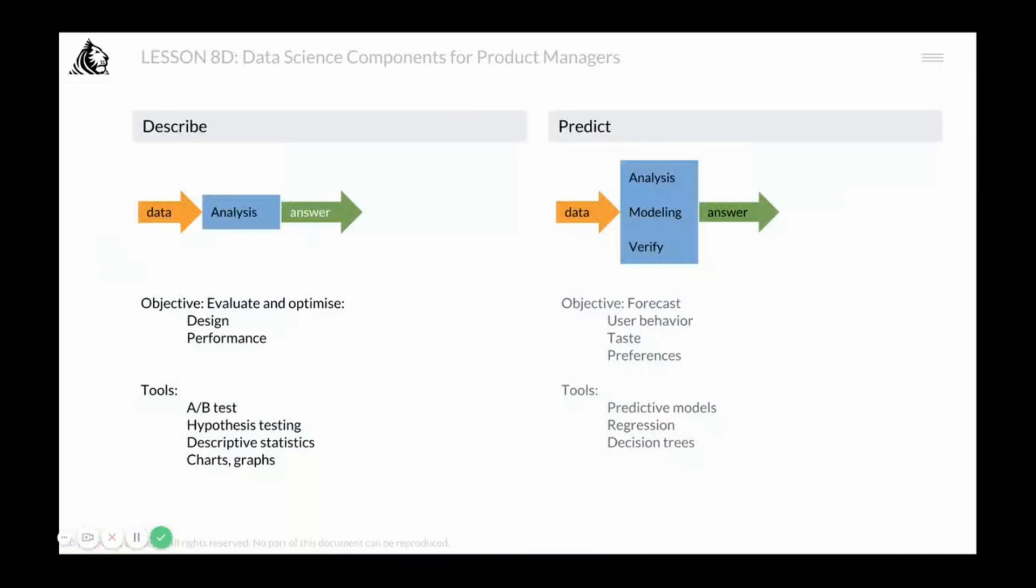The objective of predictive analytics is to forecast user behavior, user preferences, user tastes, or each one of them or all of them. The tools available to your disposal are predictive models, regression, and decision trees.